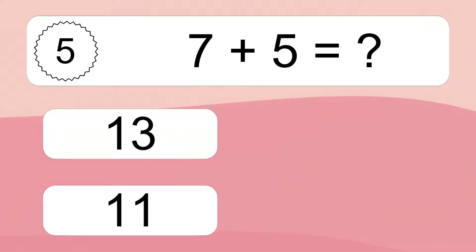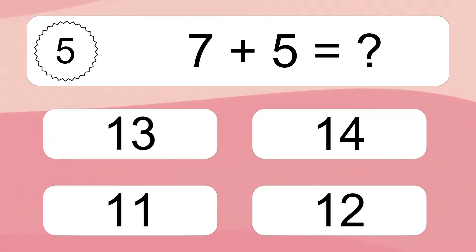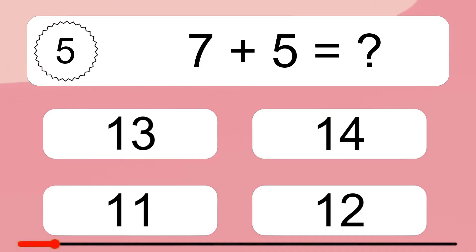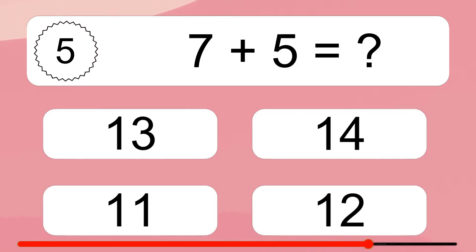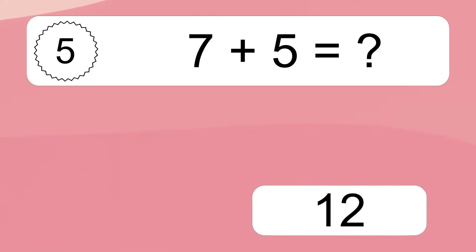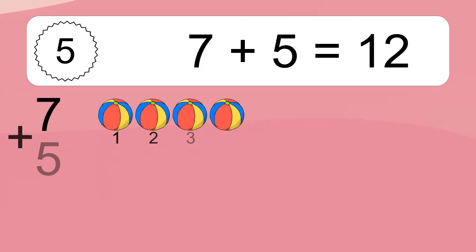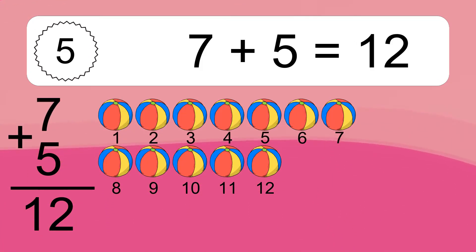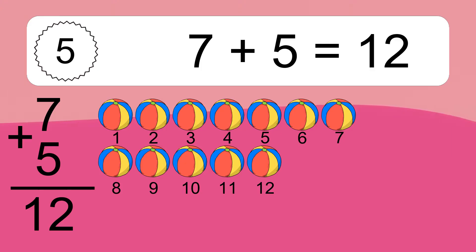7 plus 5 equals what? 7 plus 5 equals 12. Let's count it.